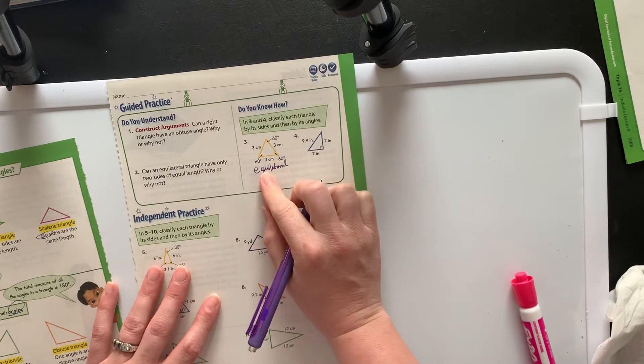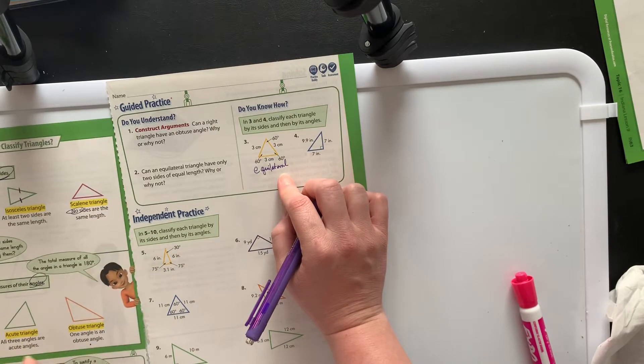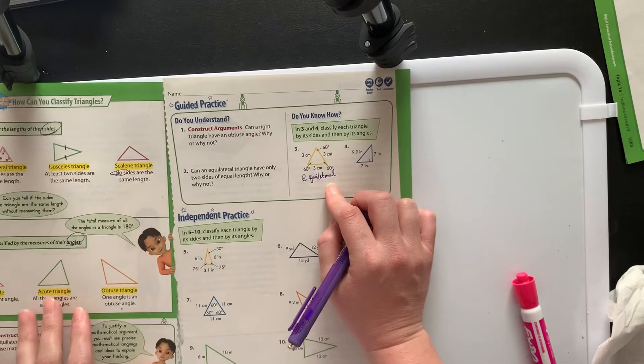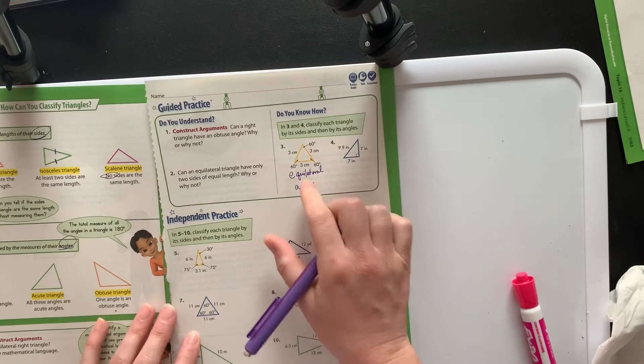Equi meaning equal, and lateral meaning side. And then this is also an acute triangle. So it's an equilateral acute triangle, as all equilateral triangles are.